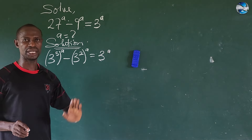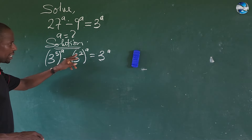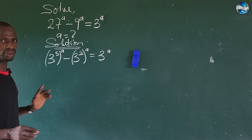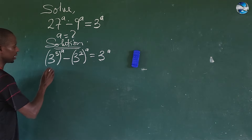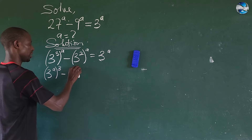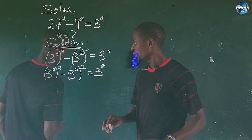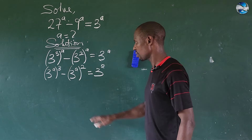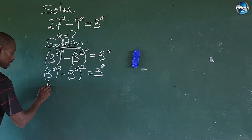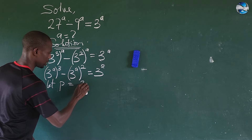So all of them are having the same base number. Since this is 3 to the power of a, we can shift in the a and bring out the exponents according to the law of indices. This gives us (3^a)^3 minus (3^a)^2 equals 3^a. We now discover that 3^a is common throughout, so let's bring in another alphabet to represent this. Let p equal 3^a.